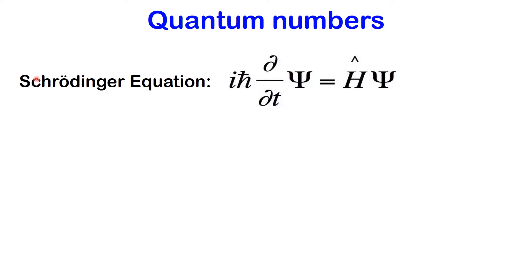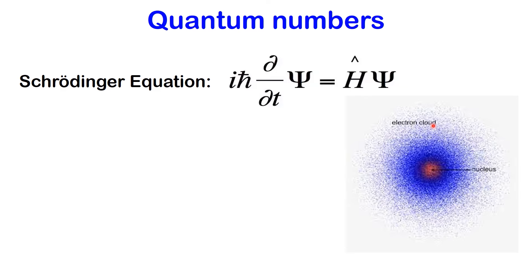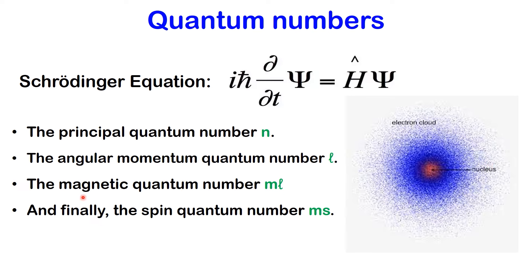Quantum numbers come from the solutions to Schrödinger's equation, helping us describe the unique address of an electron in an atom. There are four quantum numbers: the principal quantum number n, the angular momentum quantum number l, the magnetic quantum number ml, and finally the spin quantum number ms. Each one plays a vital role in defining the behavior and position of an electron.